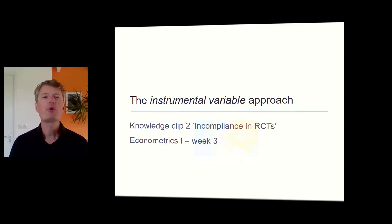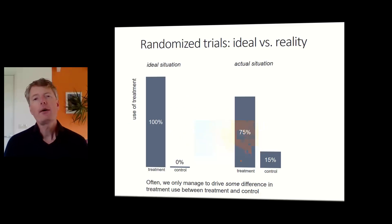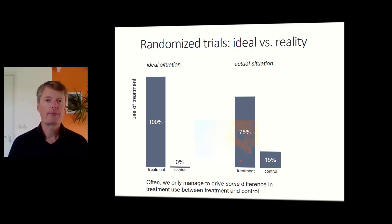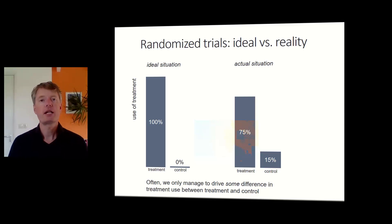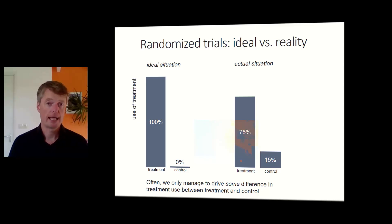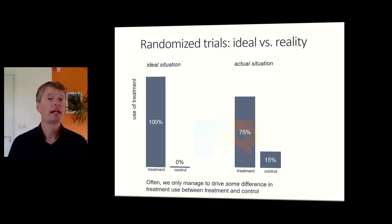So what about imperfect compliance in randomized controlled trials? What often happens is that when we do an experiment, not everything goes as planned. On the left hand we see the ideal situation. We assign a random half of our subjects to the treatment group, and 100% of them actually take the treatment, while those in the control group have 0% treatment takeup.